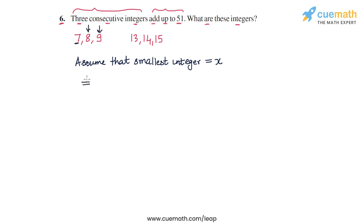So in terms of x, we can write the second integer, or the middle integer, as x plus one, and the third integer, the last integer, as x plus two.